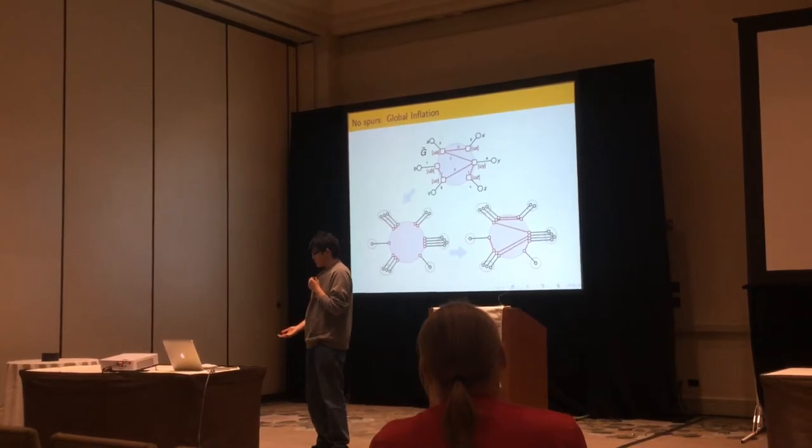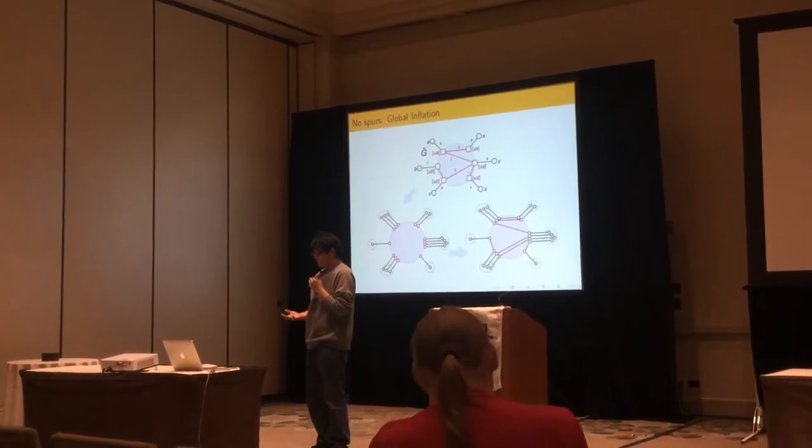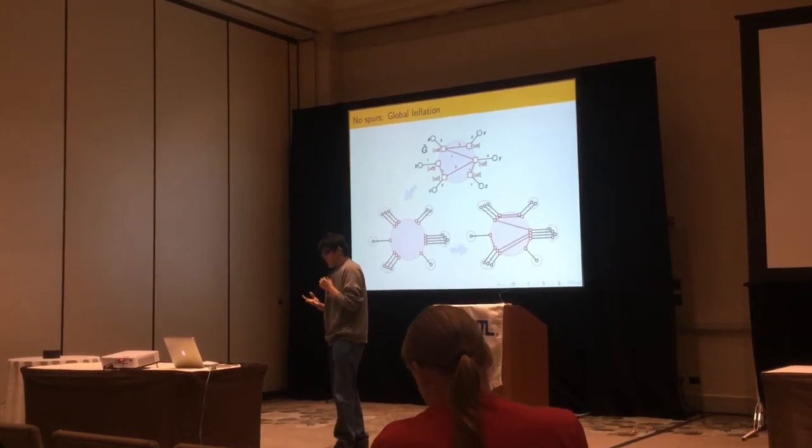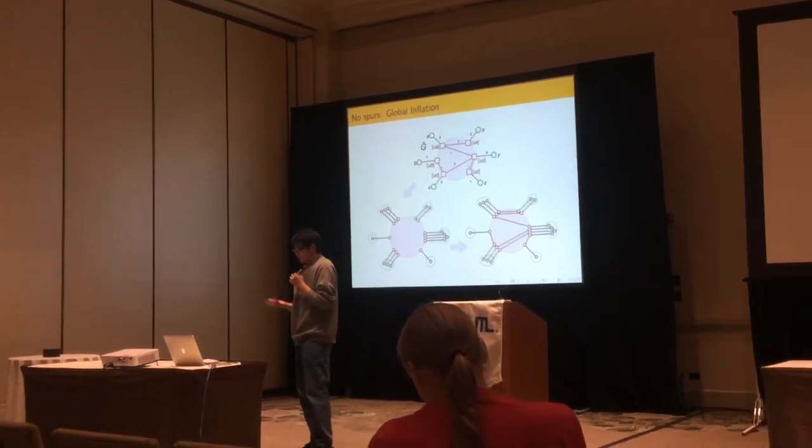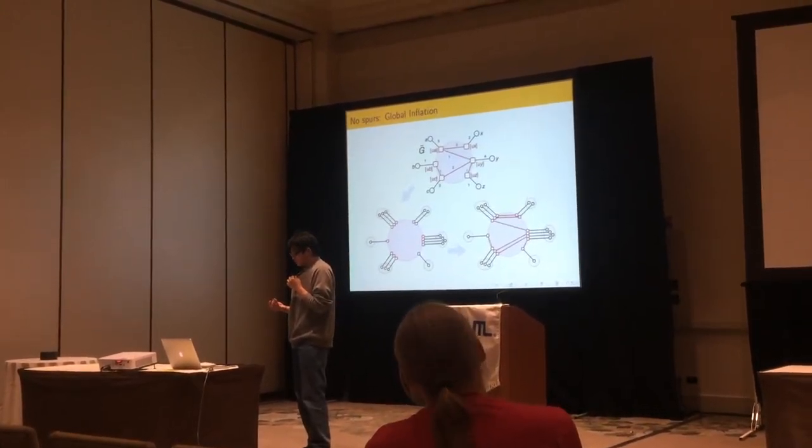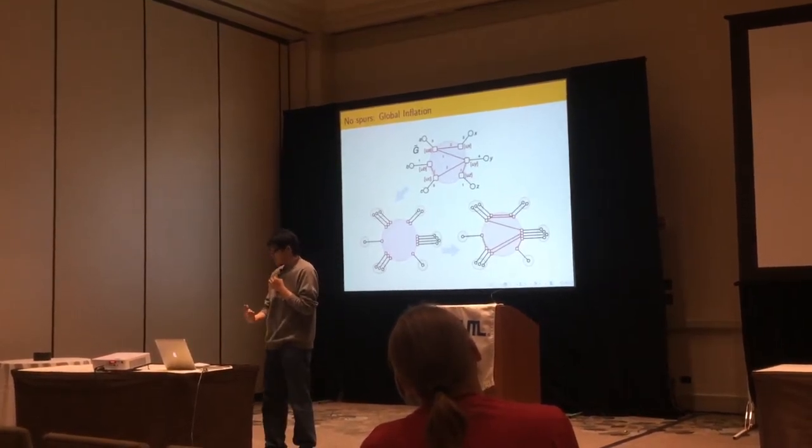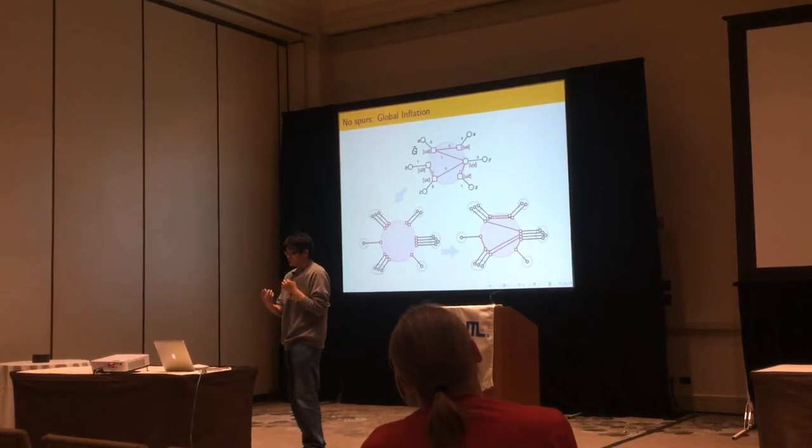So if the polygon does not have spurs, then our algorithm first does node expansion of every node. And then we'll try to construct a two-planar graph. So for every segment, we also need to associate the segment with basically how many times the edge traverses this segment.